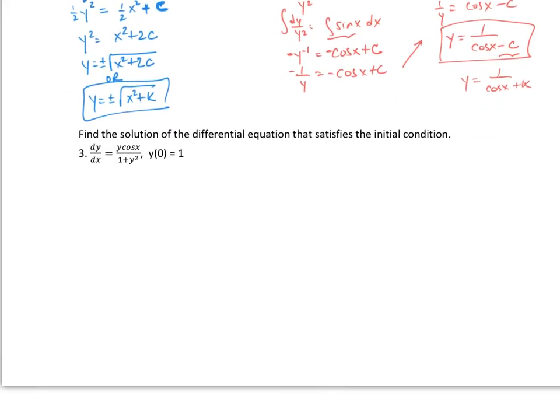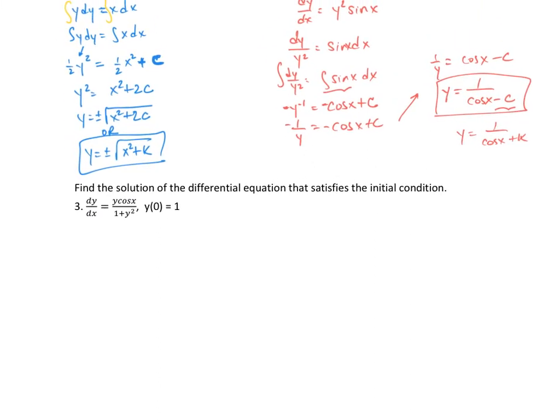Alright, let's move on to this last one. Now I have an initial condition, and that's what I was talking about before. You can end up with an initial condition here to be able to solve for what that constant is going to be. Alright, so over here, find the solution of the differential equation that satisfies the initial condition. Alright, we have our dy dx. I want to separate this out. So 1 plus y squared dy equals y cosine x dx. And then I want to bring this y over, so divide everything by y. So I'll have 1 over y plus y dy equals cosine x dx.